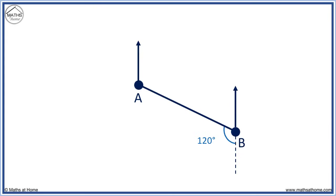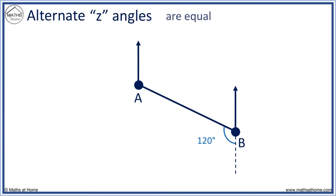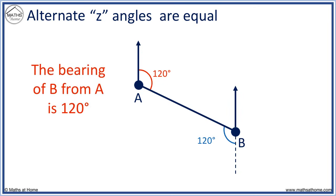Here we will find the bearing of B from A again. Alternate Z angles are equal — 120 degrees and this angle are alternate and so they are equal. The bearing of B from A is 120 degrees.